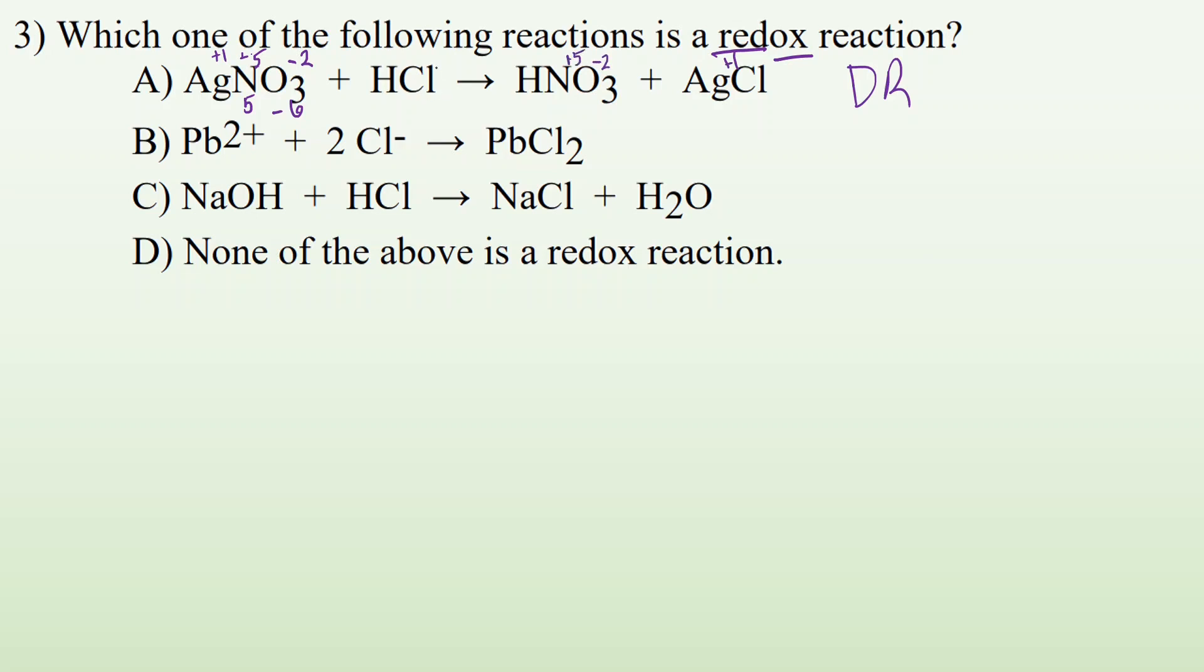And if I take a look at hydrogen chlorine, chlorine's going to have a minus one. Hydrogen's going to be a plus one. And that is still the same on the other side as well. So we don't have any changes in charges. So that can't be a redox reaction. If I take a look at PB plus two plus two CL minus arrow PBCL2, same thing as the first one. Chloride is still a minus one charge. The PB is still a plus two charge. This is not a redox reaction.